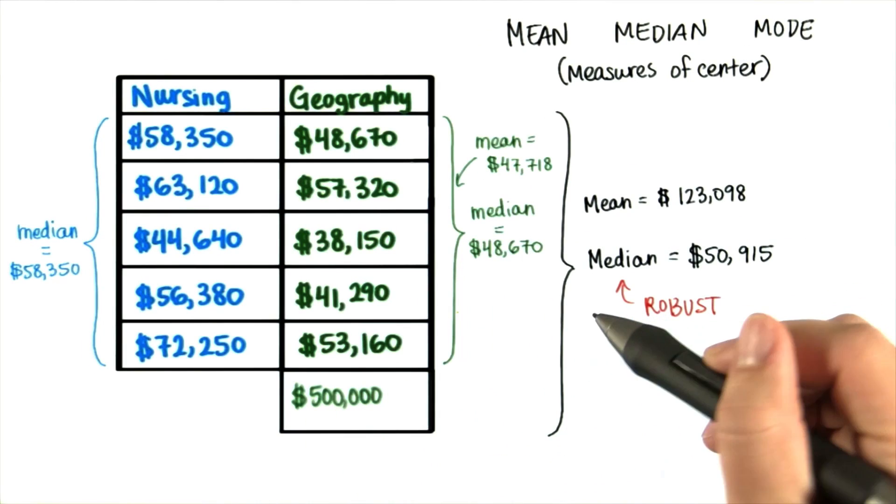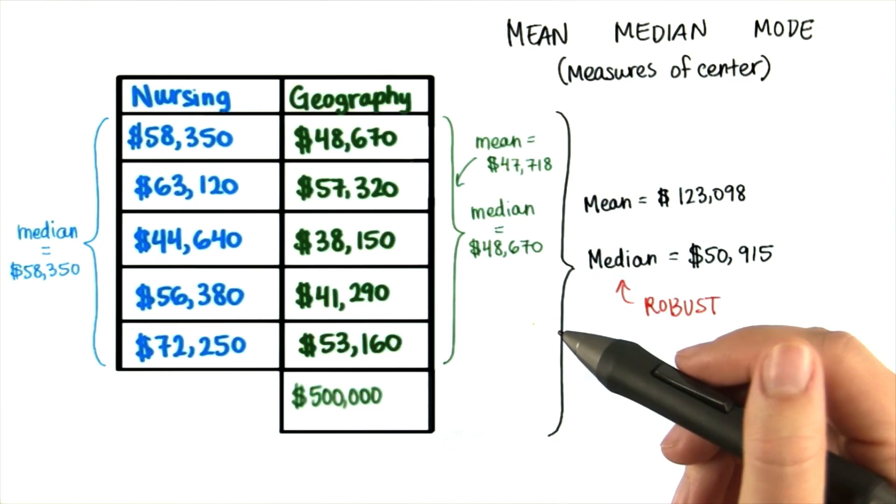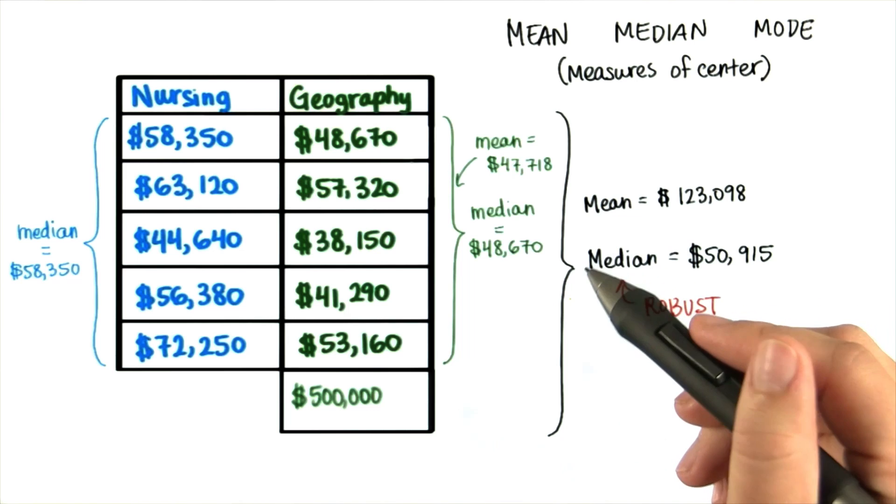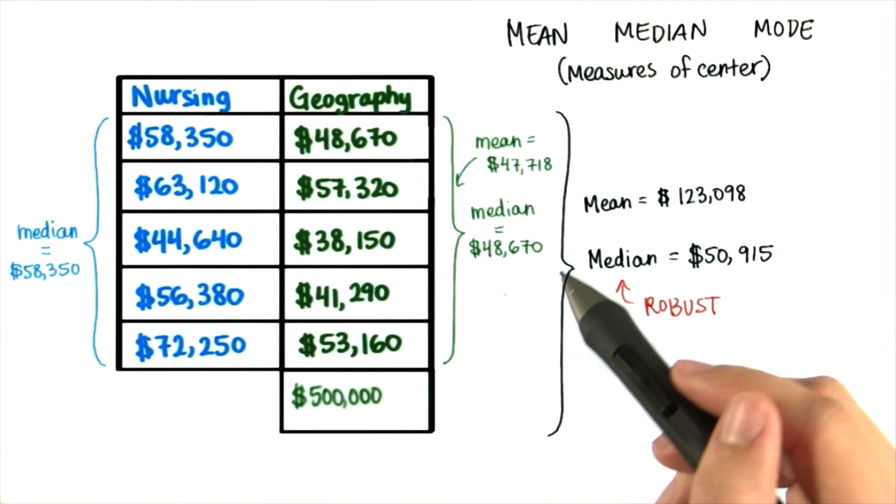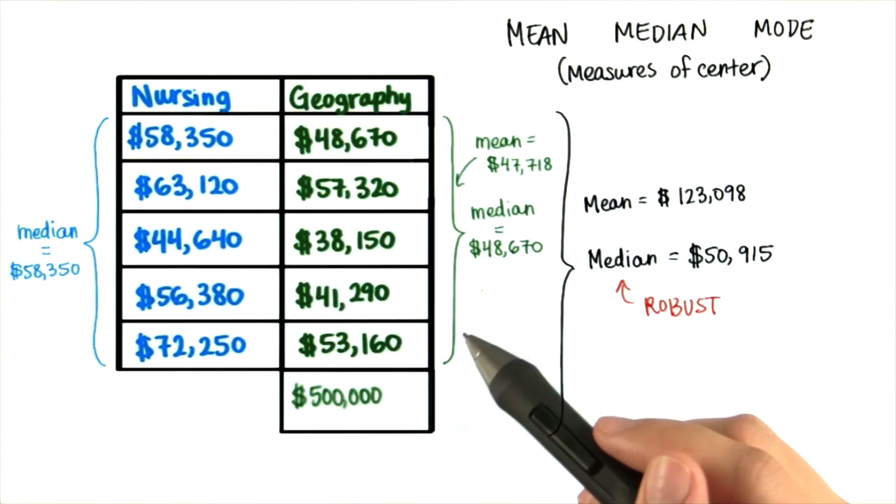However, in the case of starting salaries from the University of North Carolina, the median might have been a better statistic to determine what starting salary you would have made as a geography major in the 1980s. The median is always the best measure of central tendency when dealing with highly skewed distributions.